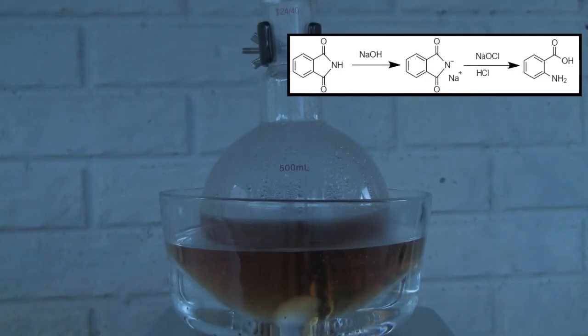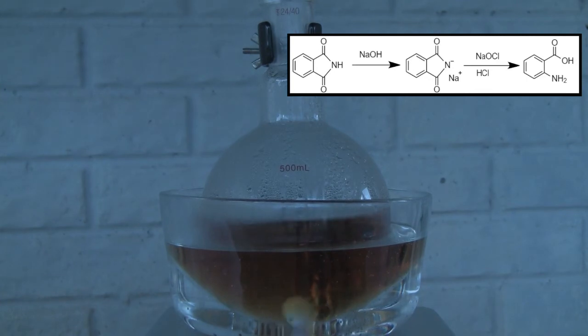The overall reaction that is occurring is shown here. The phthalimide reacts with sodium hydroxide that forms sodium phthalimide before the Hofmann rearrangement reaction starts with the sodium hypochlorite.